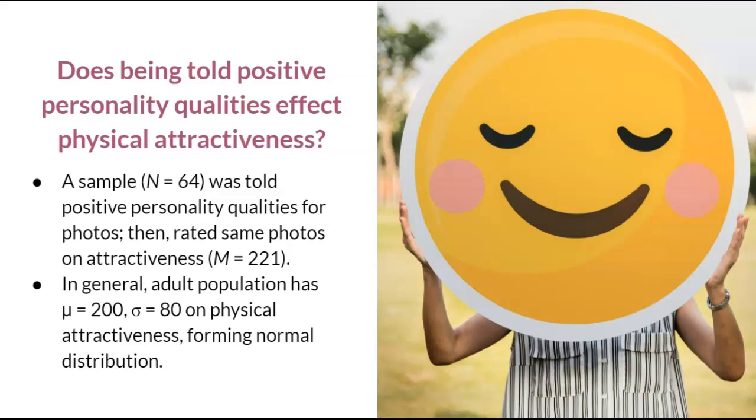A sample was told positive personality qualities while looking at photos of individuals. The sample was then asked to rate those same photos on physical attractiveness. The general population has a physical attractiveness rating of mu of 200 and sigma of 80, which forms a normal distribution. I encourage you to pause the video here and try to do the four steps on your own first, then resume the video to show the answers.